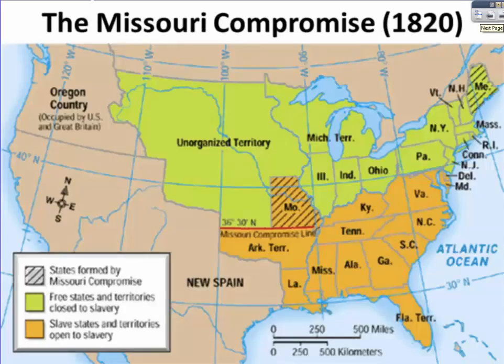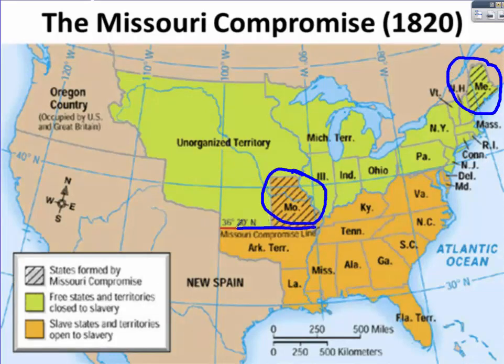Here's a map of the compromise. Maine entered as a free state, Missouri as a slave state, and this line separated free and slave territory. The territory out west was yet to be controlled by the United States, so this seemed to be a solution for all time.